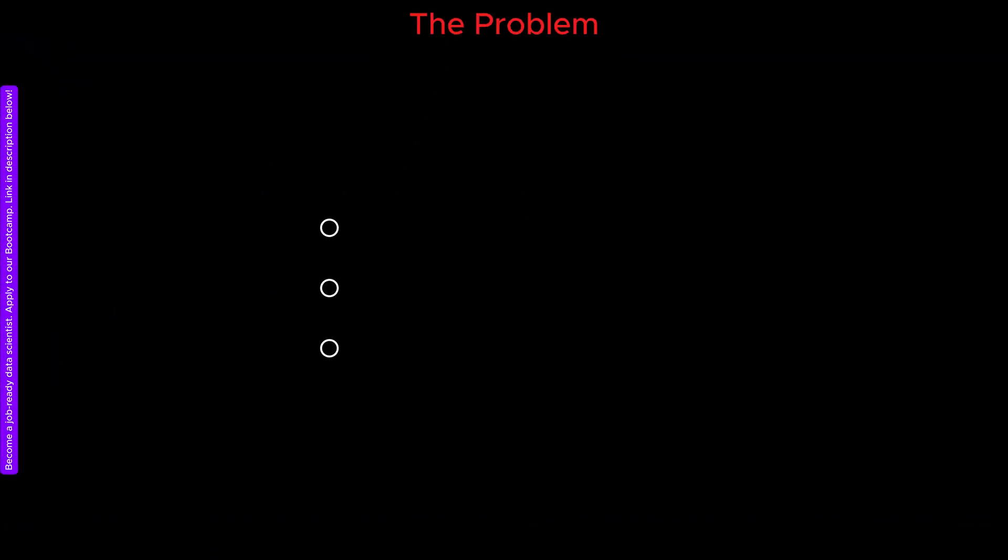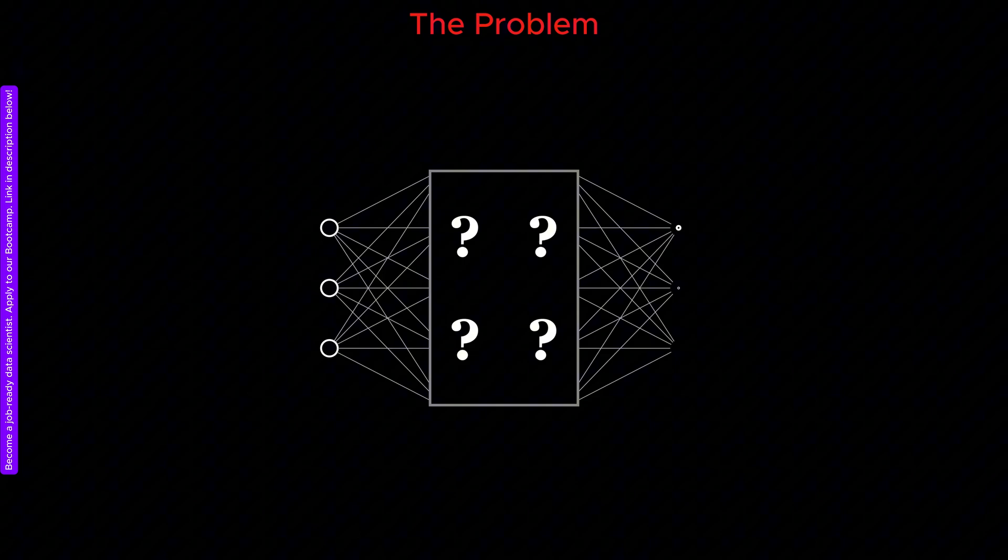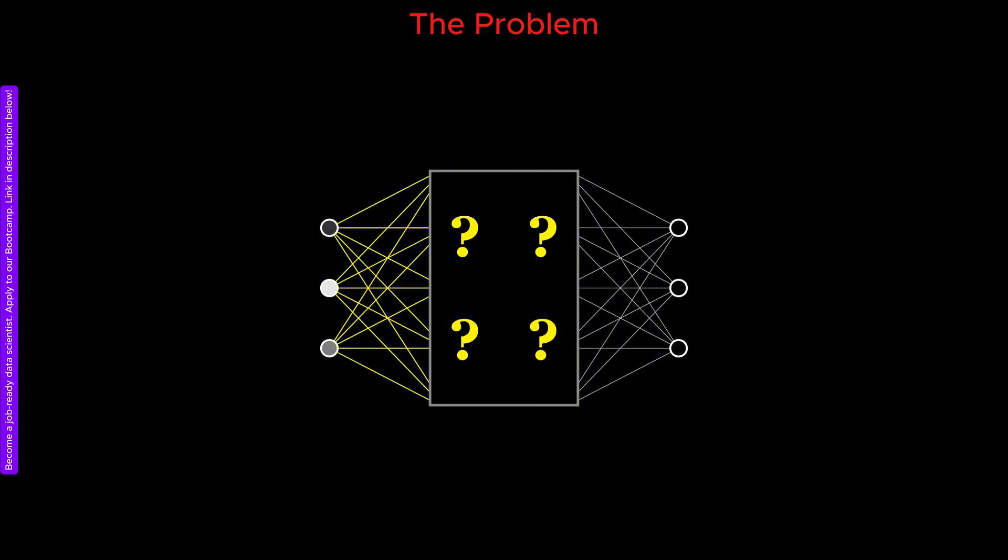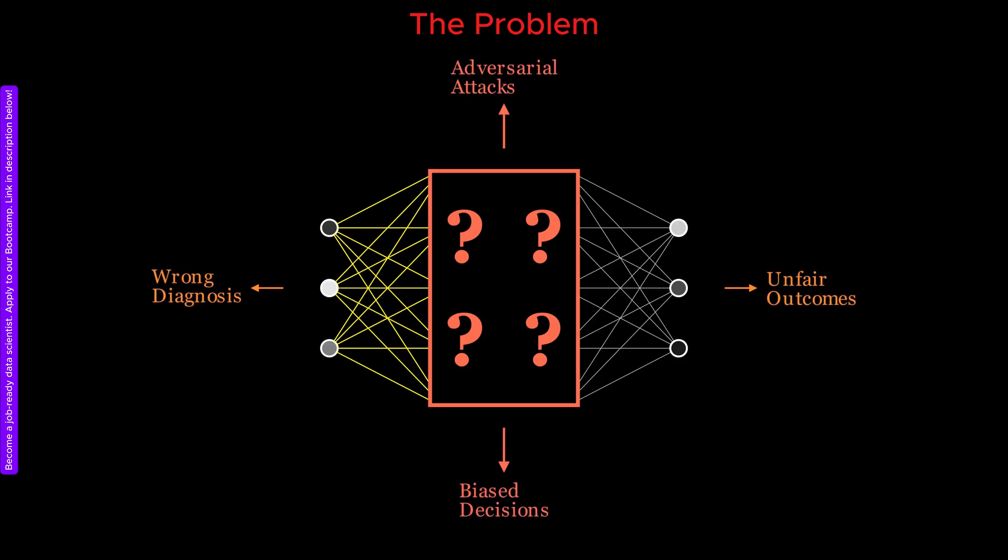The problem is that neural networks are usually considered black boxes. They transform the input layer to the output layer, but we do not really know how this transformation happens internally. As a result, we are not able to control or systematically improve the transformation. This lack of understanding can lead to safety and vulnerability issues, as well as unexpected outcomes when neural networks are deployed in real-world applications.